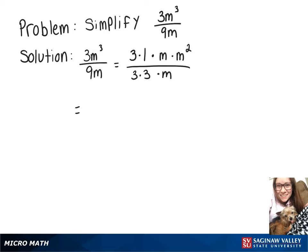And now breaking those up, we can rewrite that as 3 over 3 times 1 over 3 times m over m times m squared, or you can think about it as m squared over 1.